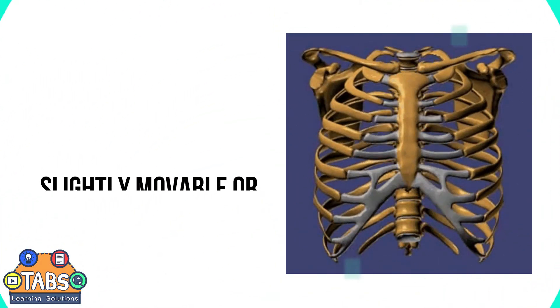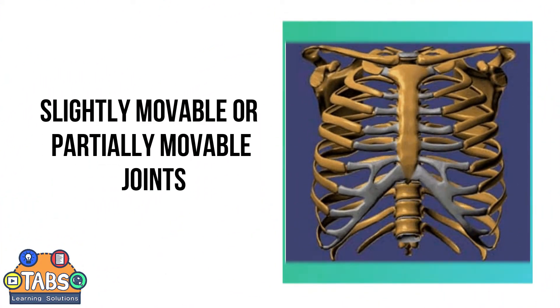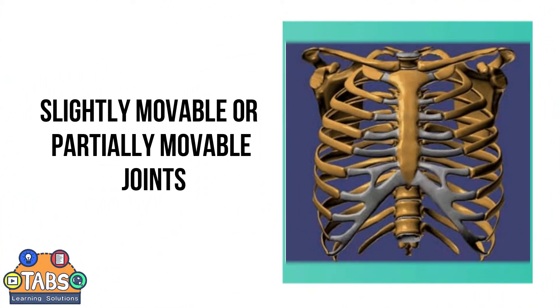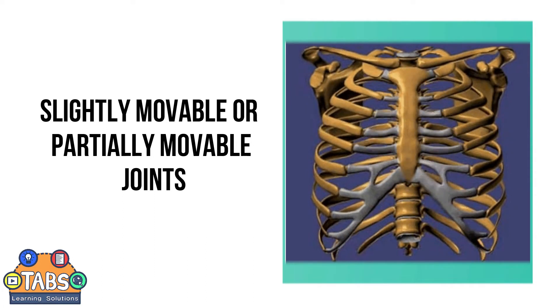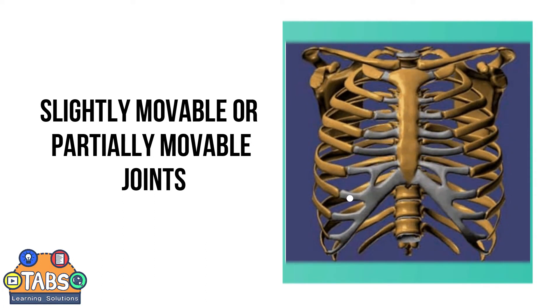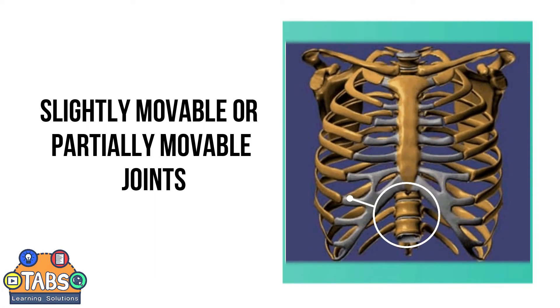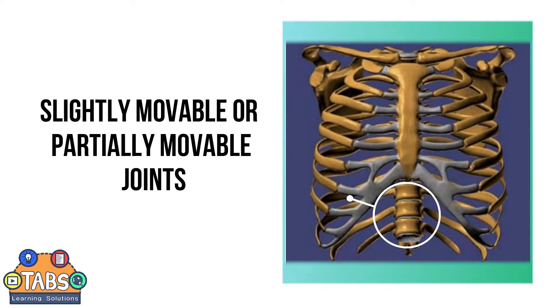The second one is the slightly movable or partially movable joints. They allow the chest to expand while breathing and they are found in the backbone, between the ribs and the breastbone.